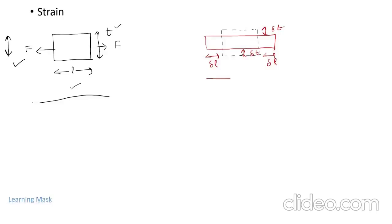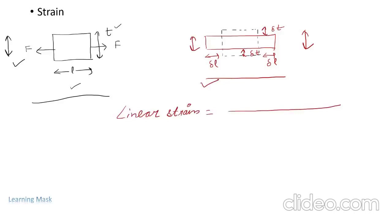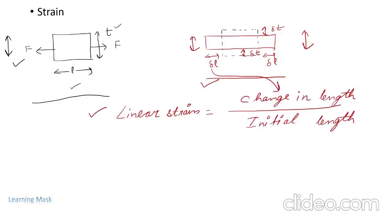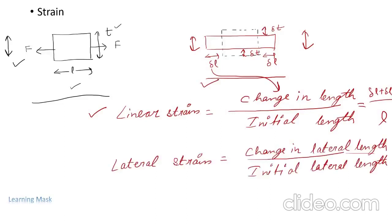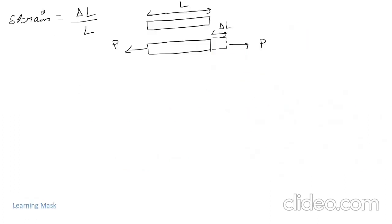We define two types of strain: linear strain — the strain along the length — and lateral strain — the reduced cross section. Since strain is change in length by initial length, linear strain is the ratio of change in length to initial length, giving us 2·delta L over L. Similarly, lateral strain is the ratio of change in lateral length to initial lateral length, which is delta T over T.